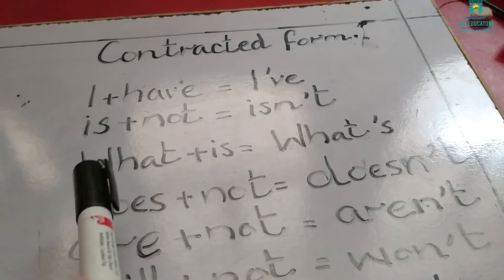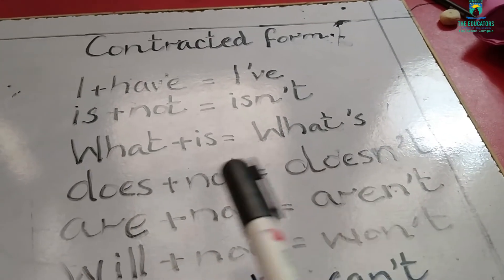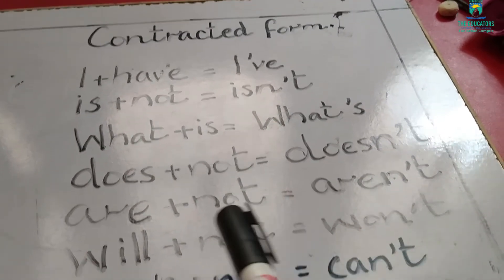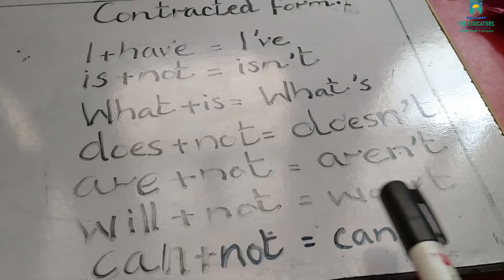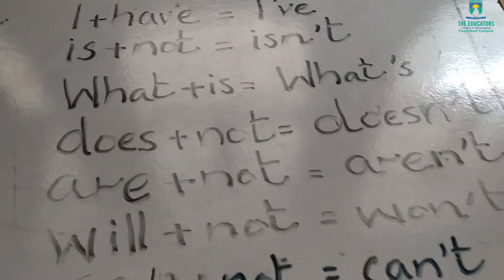isn't, what is becomes what's, does not becomes doesn't, are not becomes aren't, will not becomes won't, cannot becomes can't. Hope today's lecture is clear to you.